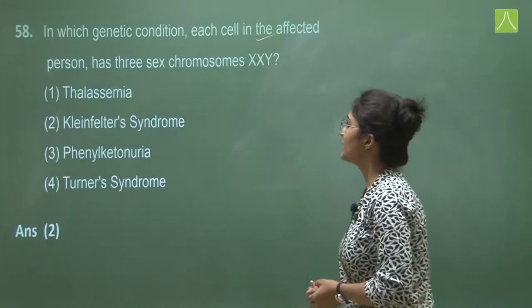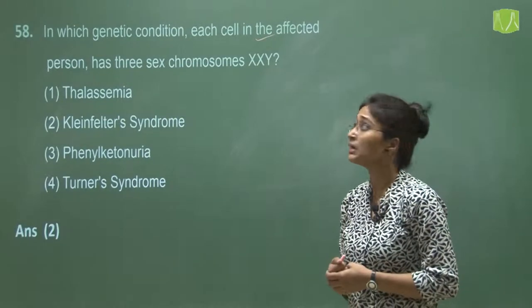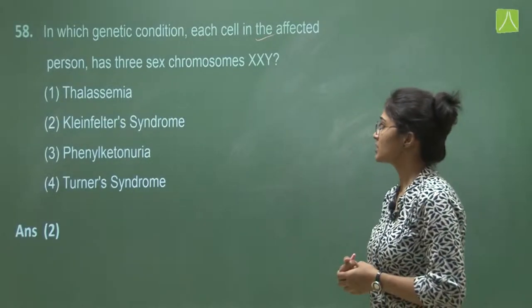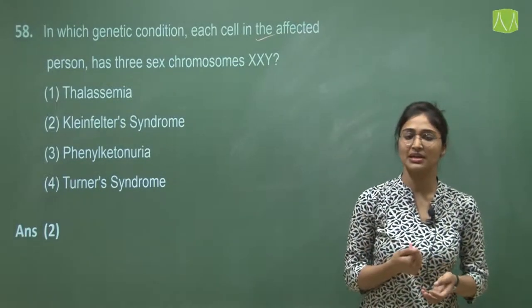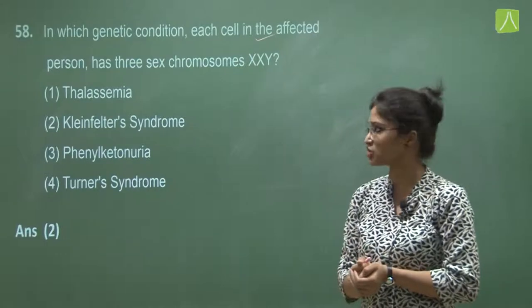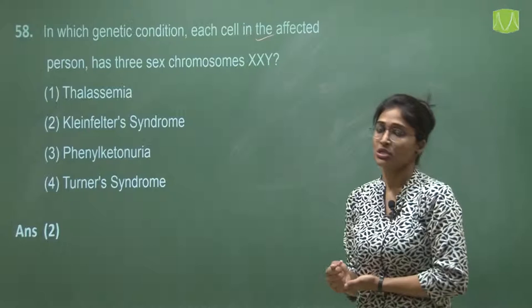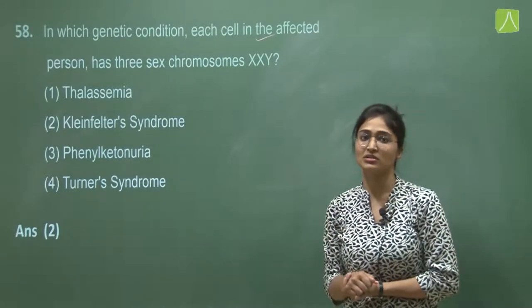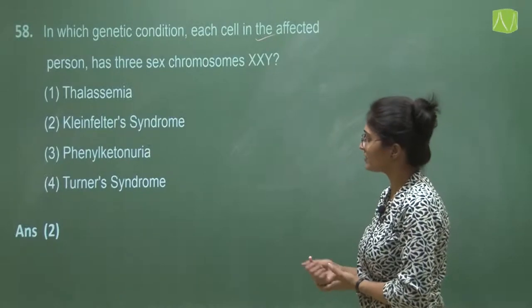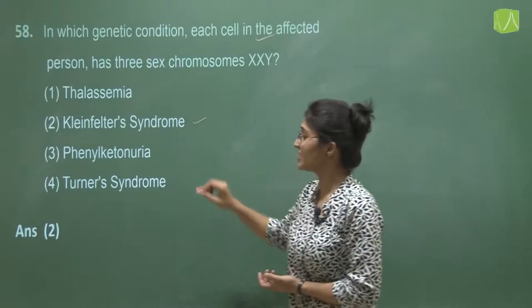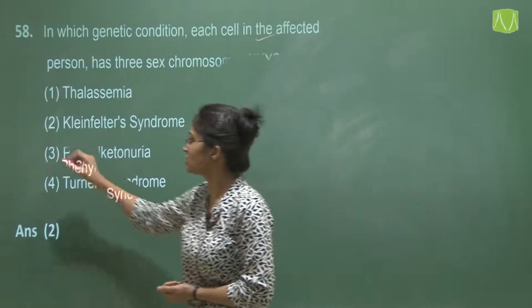Question 58 asks in which genetic condition each cell in the affected person has three sex chromosomes (XXY). This is a chromosomal aberration in which a male gets an extra X chromosome along with Y. The term gynecomastia is mentioned in NCERT for this condition. The correct answer is Klinefelter syndrome — option two. Thalassemia, phenylketonuria, and Turner syndrome are not correct.